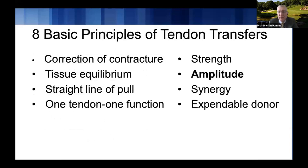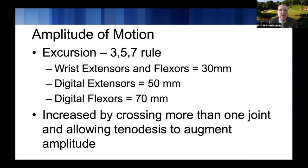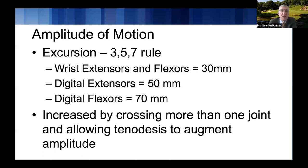The amplitude of motion refers to the excursion that a muscle has. A good way to remember this is the 3-5-7 rule: wrist extensors and flexors have about 30 millimeters of excursion, digital extensors have about 50 millimeters, and digital flexors have about 70 millimeters. If you're trying to restore digital flexion using a wrist extensor, you'll need to augment it to get from 30 toward 70, or you'll have very limited flexion. We can increase relative excursion by crossing a joint and allowing tenodesis to augment amplitude.